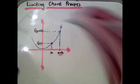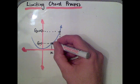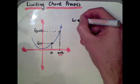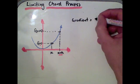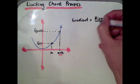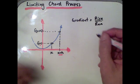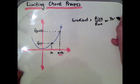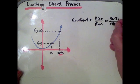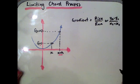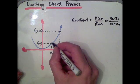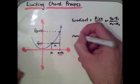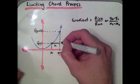When we talk about the limiting chord process, we want to find the gradient between two points. We can use a number of formulas — one could be rise over run, or we could use y2 minus y1 over x2 minus x1. The limiting chord process is about finding the gradient at a point. Looking at our run: x plus h minus x leaves us with h, so our run is h.